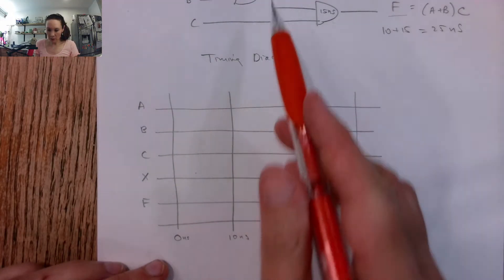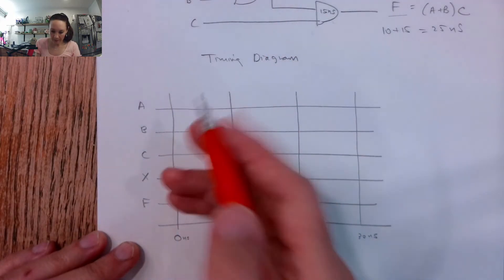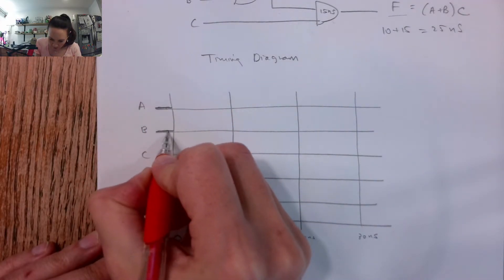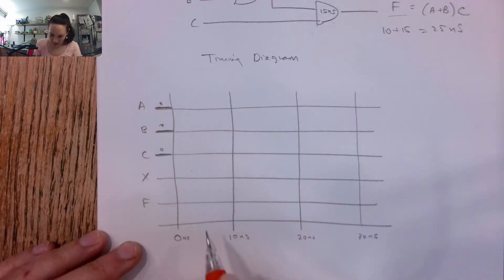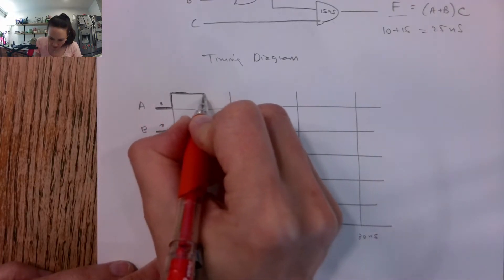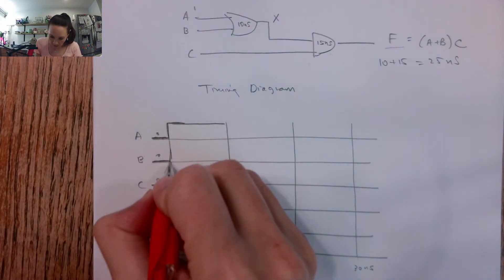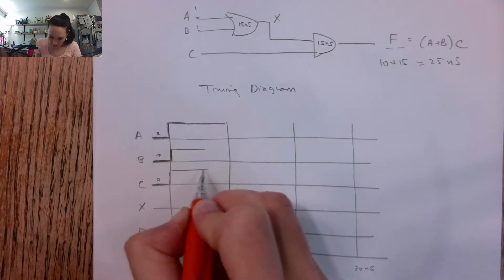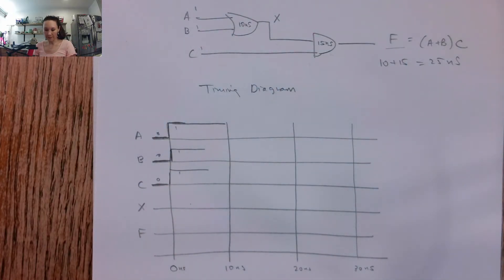Now suppose when we first use this circuit, we have an input of 111. So initially we say our inputs are 0, 0, 0, and then at time equals 0, suppose they all go to 1. So now we're going to have 1s coming in on A, B, and C. So here are 1s coming into the circuit.